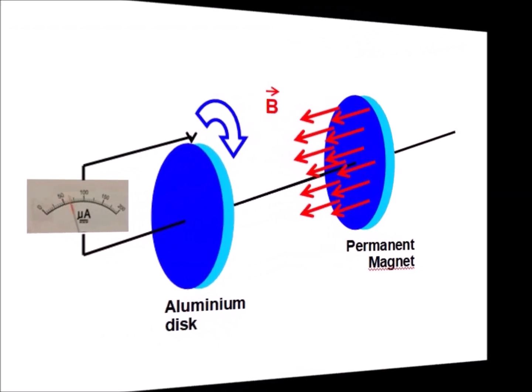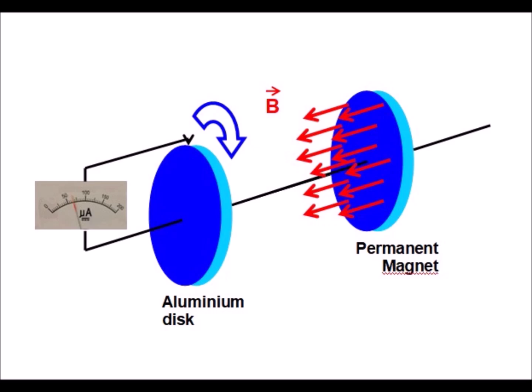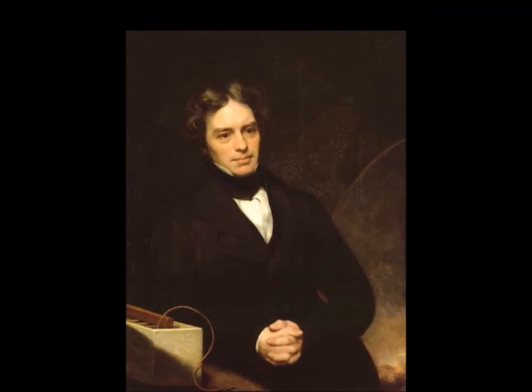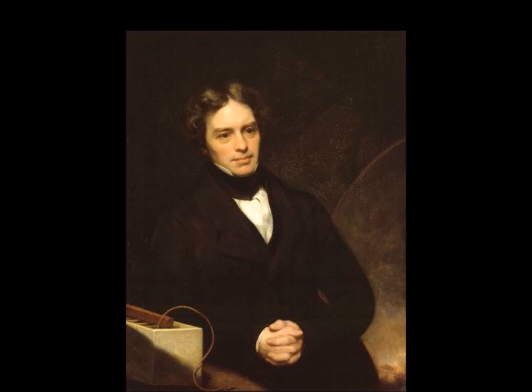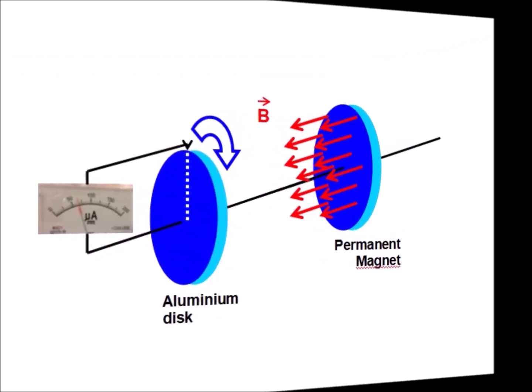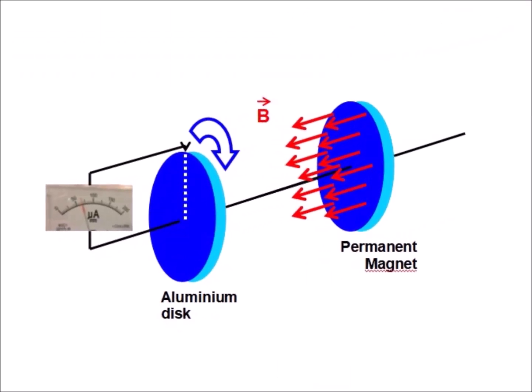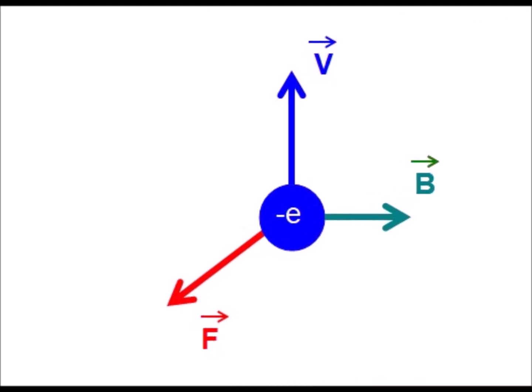On the contrary, if the conductive disk rotates, a current flows through it. This paradox surprised Faraday — nothing seems to change magnetically, and he would expect to see no current. A first explanation was proposed after the discovery of electrons: the circuit composed of the rotating disk and the brushes constitutes a loop which rotates in the magnetic field of the fixed magnet. As a result, the electrons in the circuit are subjected to the Lorentz force and generate a current.